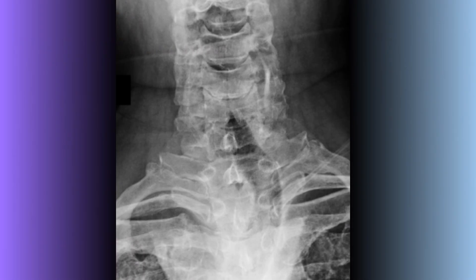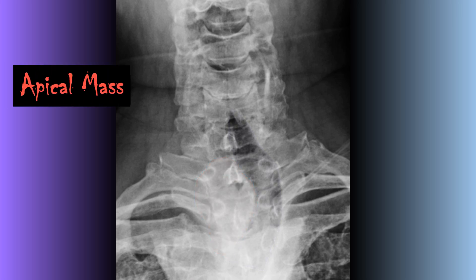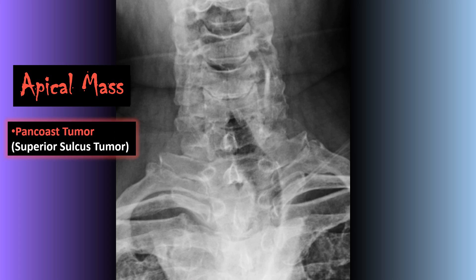Here's a good example of a lung pathology seen on a non-chest film. On this frontal view of the cervical spine, you should see a focal deviation of the tracheal air shadow to the left, being pushed by this large space-occupying lesion within the right lung apex. This ends up being an apical mass, or a Pancoast tumor — an aggressive lesion within the chest.